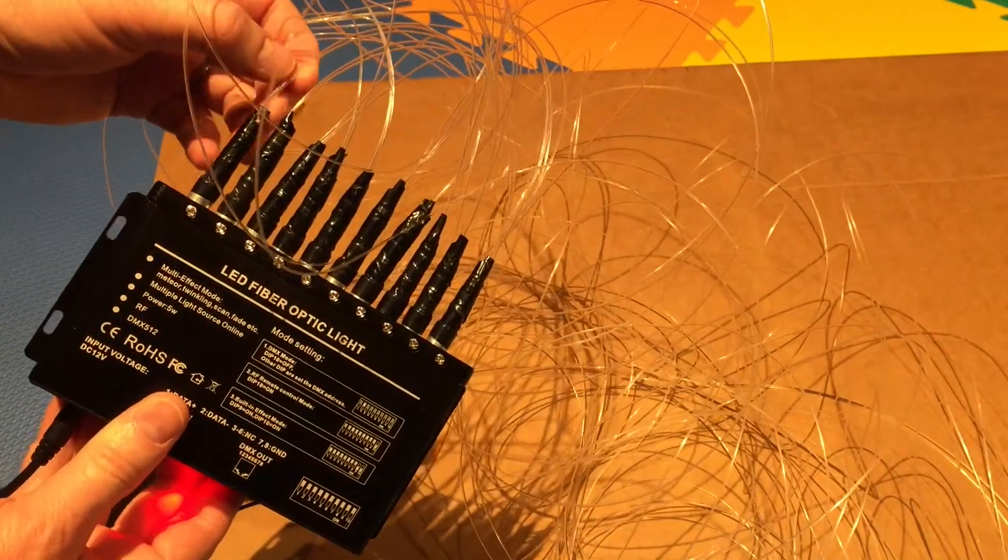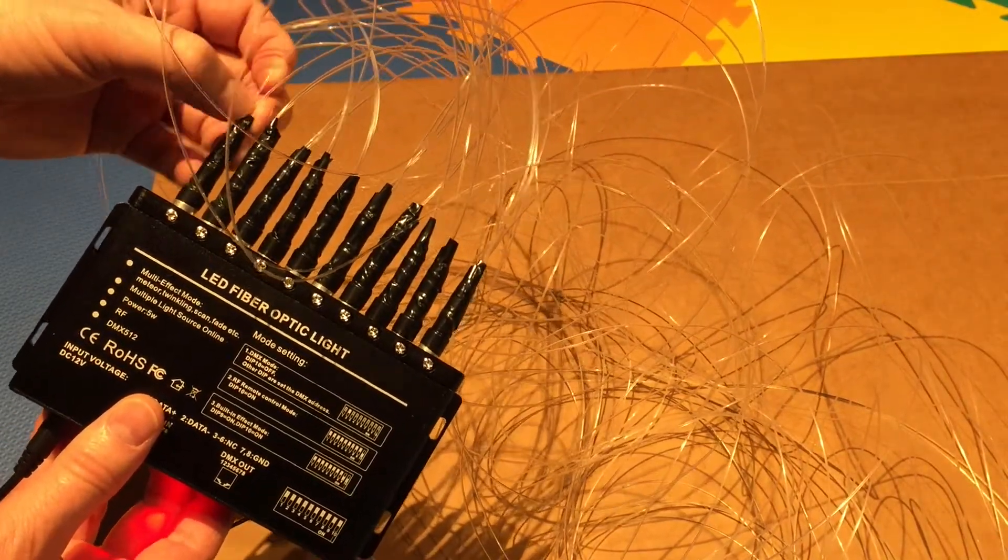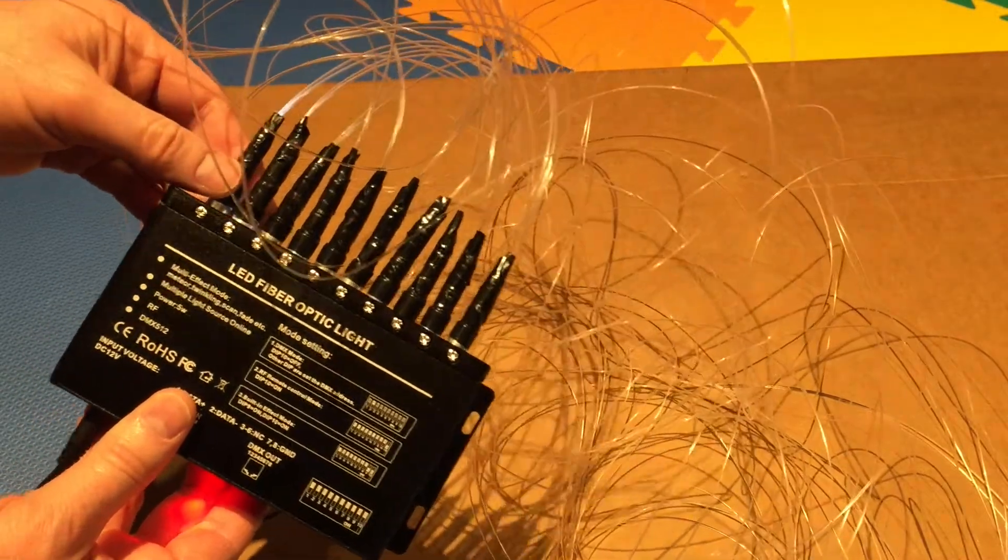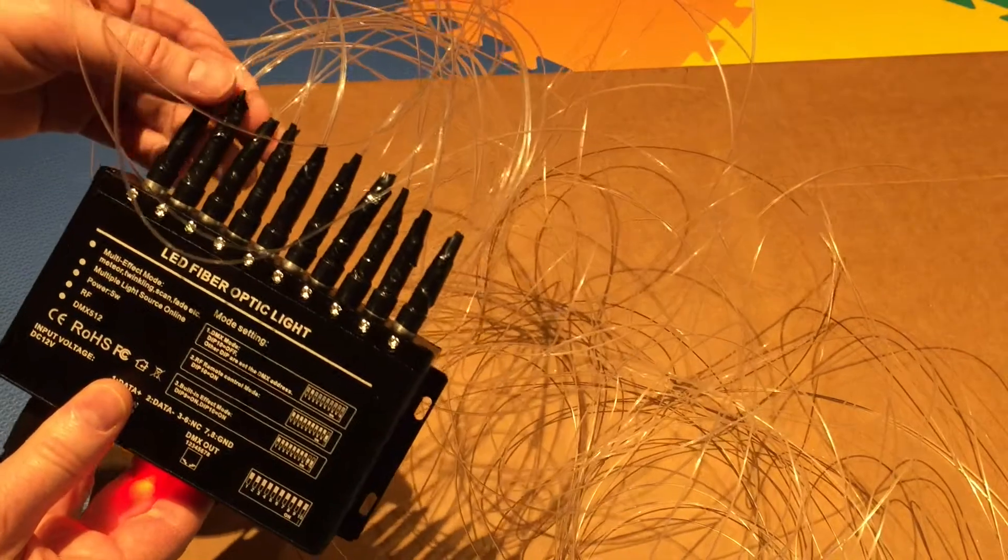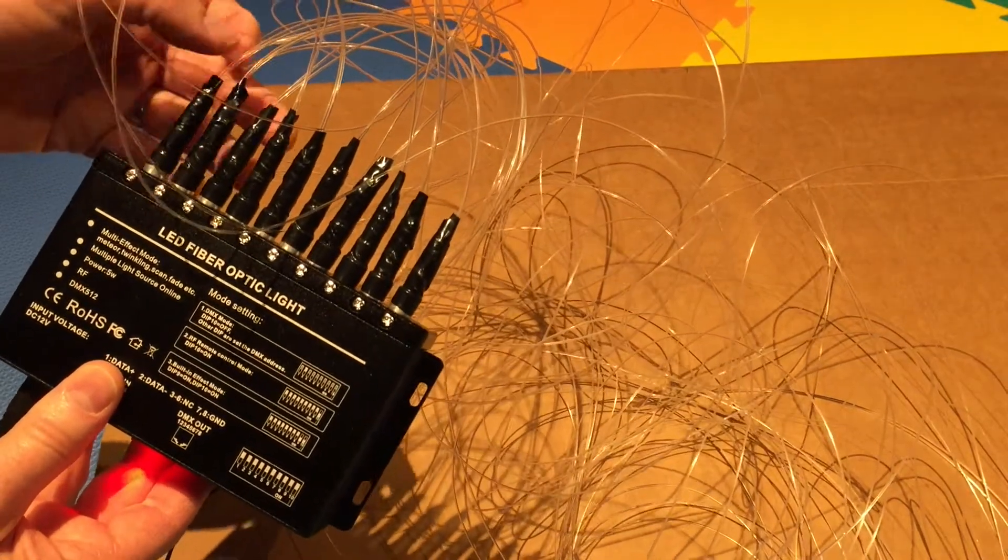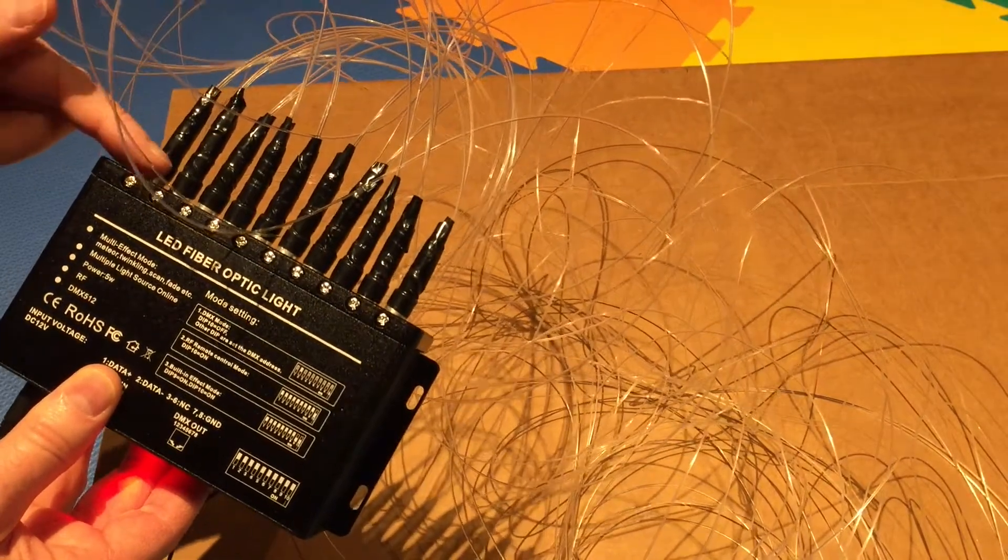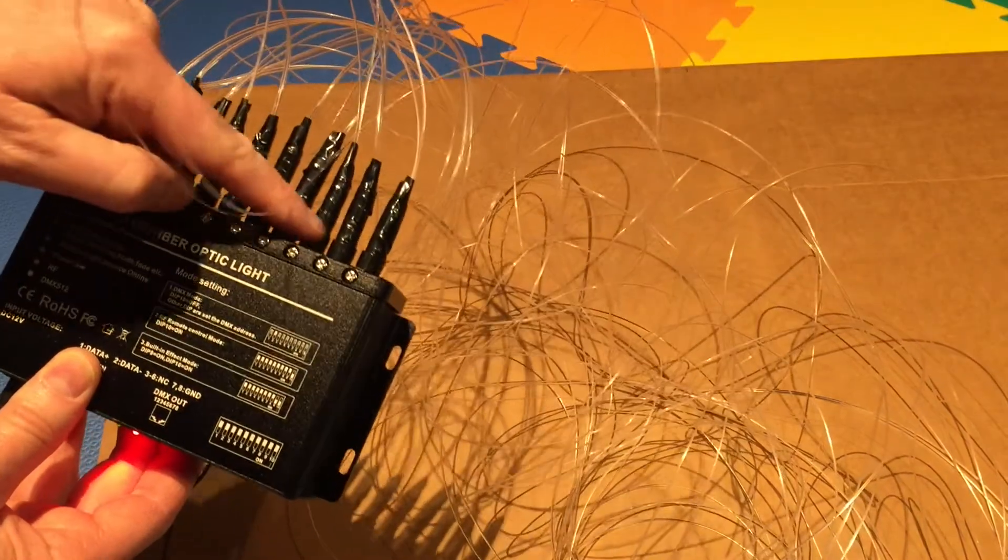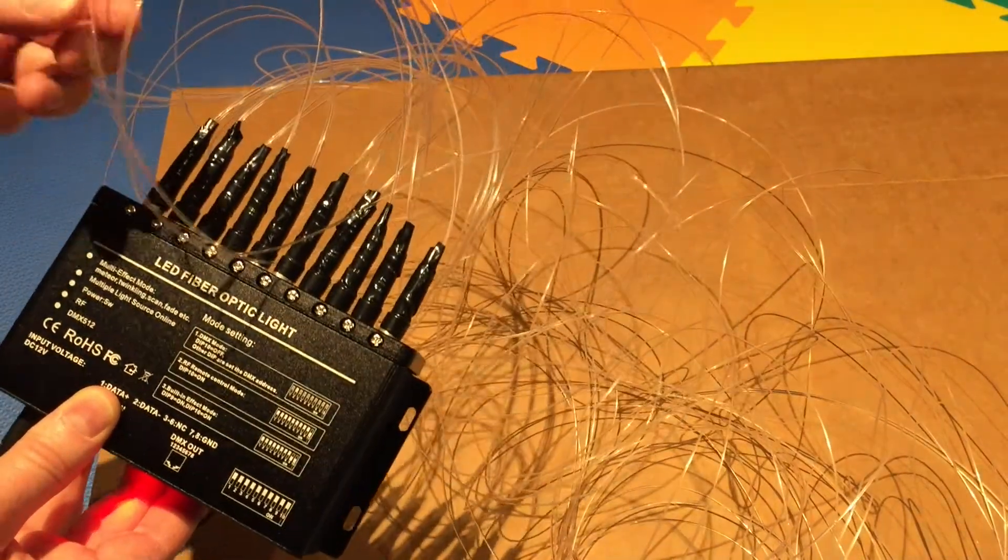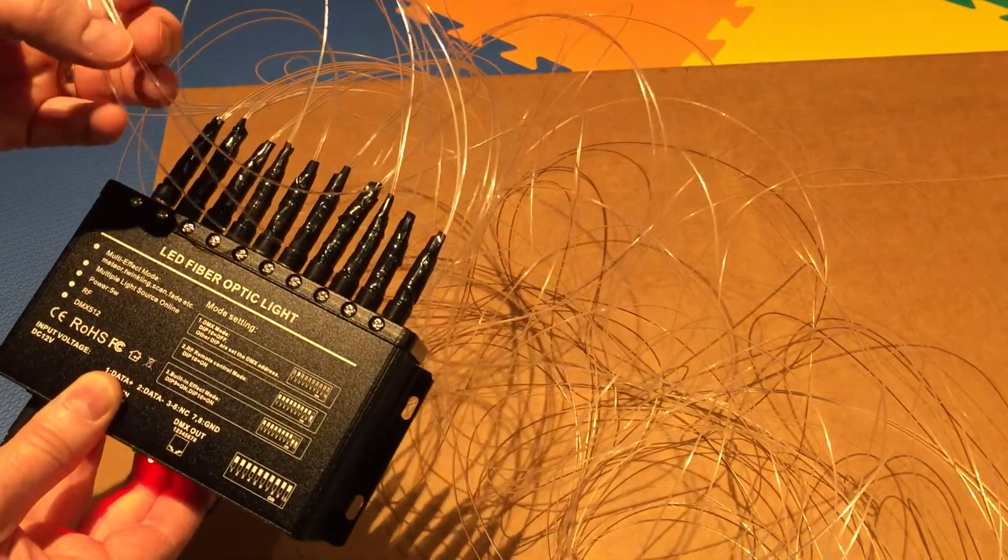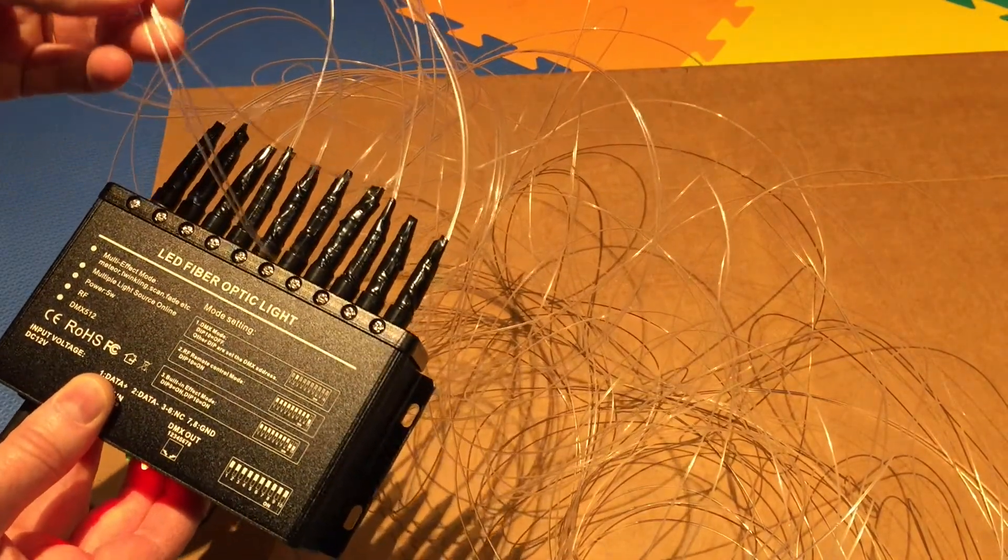The starter kit only had two fibers per lamp, so I've got to stretch those out and make sure that they look okay. If it doesn't, I might get some more fiber optics and add some fibers to each one of these, so I've got three or four per. The fibers are one millimeter in diameter, which is kind of large, so I think they'll be reasonably bright.